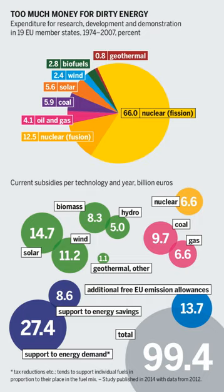The study estimated that subsidies to fossil fuel-based sources totaled about $72 billion over this period and subsidies to renewable fuel sources totaled $29 billion. The study did not assess subsidies supporting nuclear energy. In 2012, a study authored by researchers at the Breakthrough Institute, Brookings Institution, and World Resources Institute estimated that between 2009 and 2014 the federal government would spend $150 billion on clean energy through a combination of direct spending and tax expenditures.